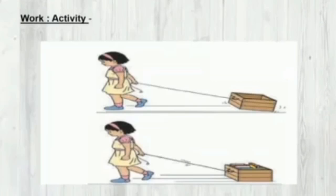Try this activity. Tie a string to an empty box as shown in the picture. Pull the box through a distance of 10 meters along a straight line. Now, fill the same box with 20 books. Pull the box again through a distance of 10 meters in a straight line. What was your experience this time? Now, pull this loaded box through a straight distance of 20 meters.